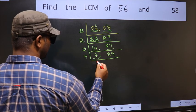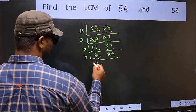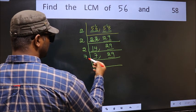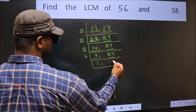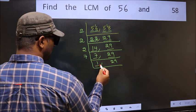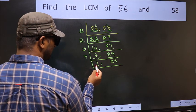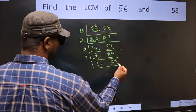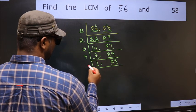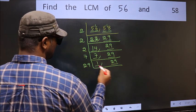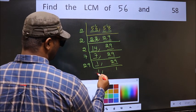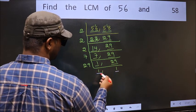Now here we have 7. 7 is a prime number, so 7 once is 7. The other number is 29, which is not divisible by 7, so we write it down as it is. Now we got 1 here, so focus on the other number, 29. 29 is a prime number, so 29 once is 29. So we got 1 in both places.